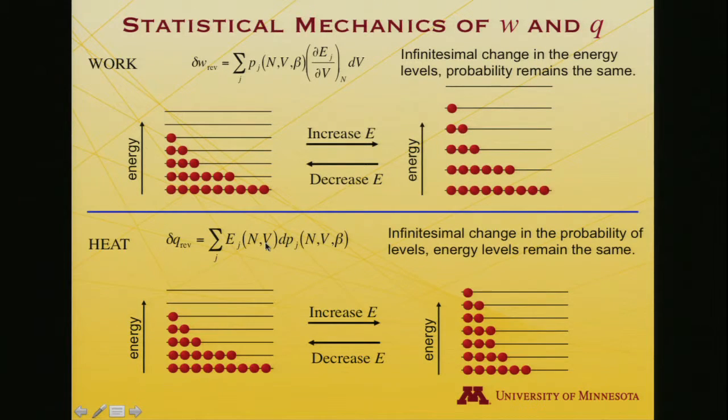What about the heat term? The heat term might even be a little bit more sensible in a way. If I keep the energy levels the same, so these lines are spaced just the same as these lines, but I change the probability of being in those levels, so to increase the energy, I'd move probabilities out of low levels up into high levels. That's like increasing the temperature. It's adding heat. Decreasing the energy, obviously the opposite direction.